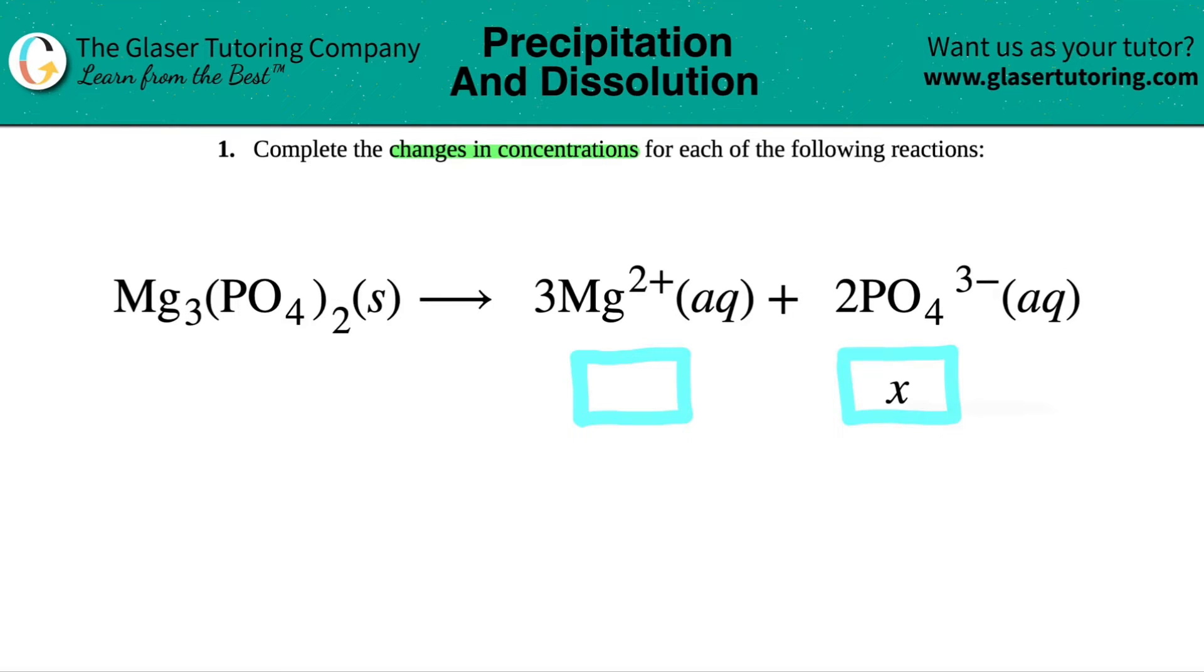Now, before we start this one, I just want to say I believe that there's a little typo here since we got it from a textbook. This should not be X, this should be 2X. So I'm going to answer this question as if the two should have been there.